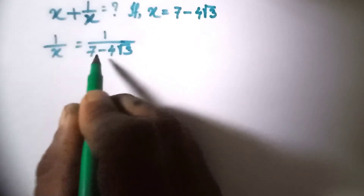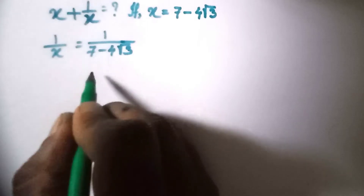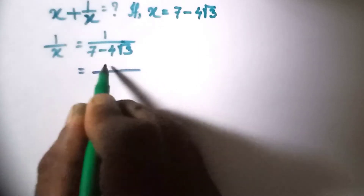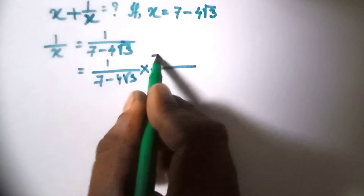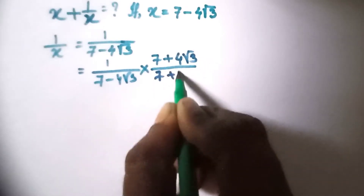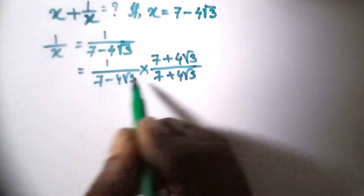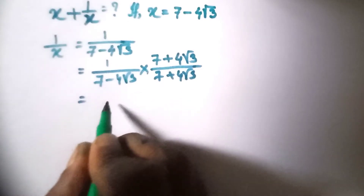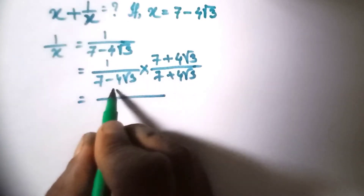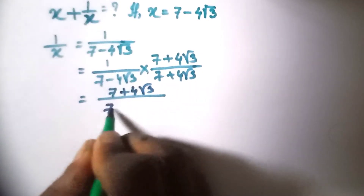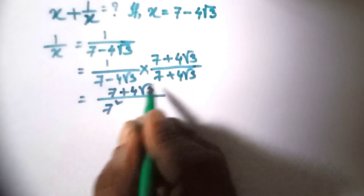This term we can calculate as an easy term. To get the easy term, we need to multiply both sides by 7 plus 4 root 3 over 7 plus 4 root 3. Since there is a minus, we multiply both sides by the plus conjugate. We can then write this using the a squared minus b squared formula.